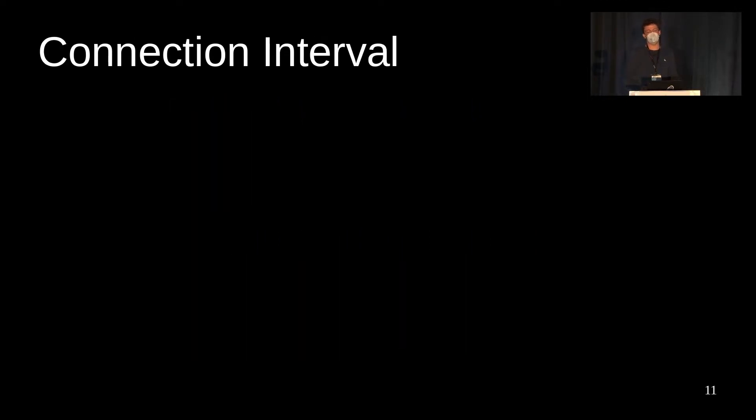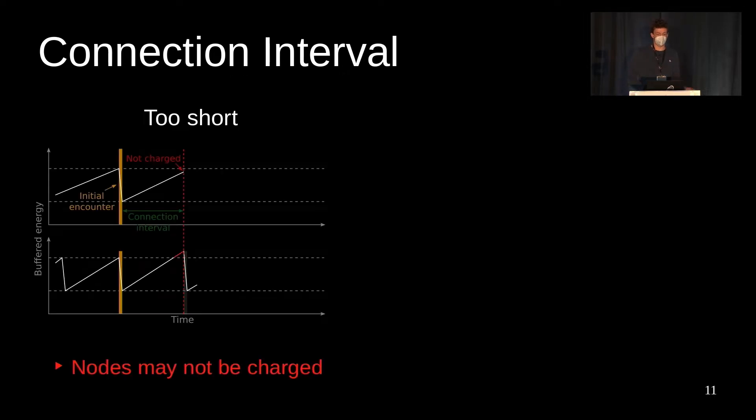The challenge is how devices should select the connection interval. If it's too short, one of the devices may not be sufficiently charged yet. In this example, the upper node has not yet reached the threshold when the connection interval has passed, and the connection breaks.